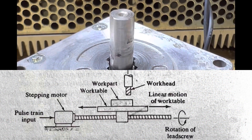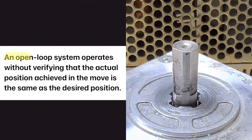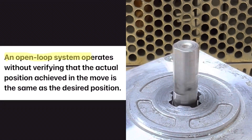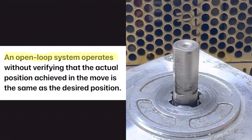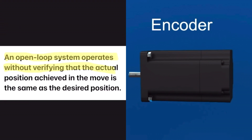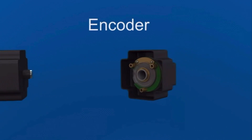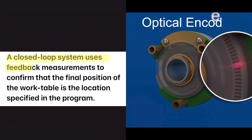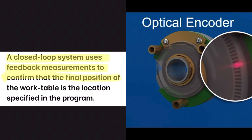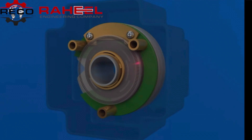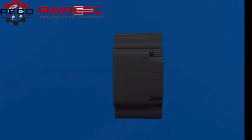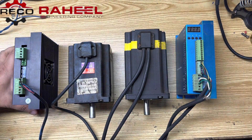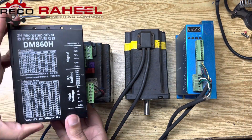An open loop system operates without verifying that the actual position achieved in the move is the same as the desired position. A closed loop system uses feedback measurements to confirm that the final position of the work table is the location specified in the program. In short, open loop has no feedback and closed loop does.